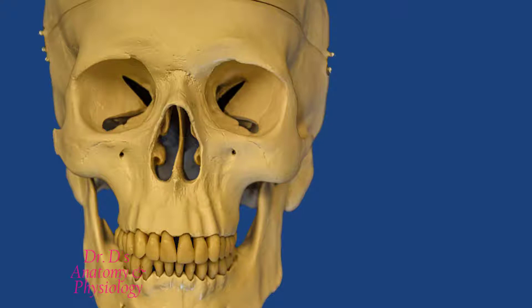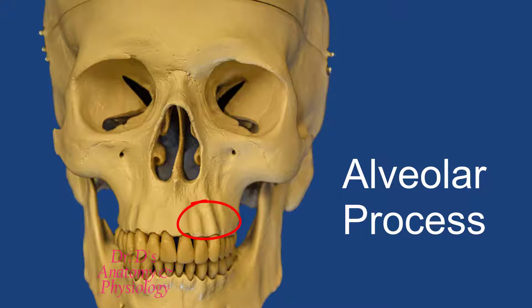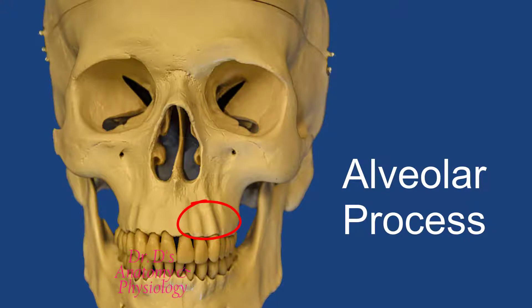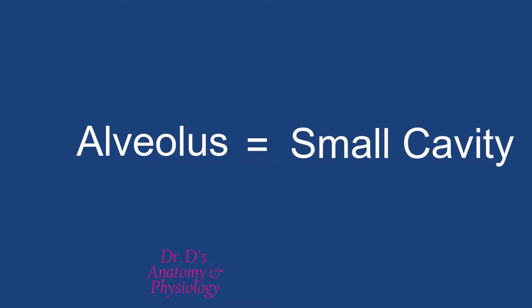Another process is a tricky one — it's called the alveolar process. This is a process which often confuses students because when you think of a process you think of something that sticks out and is somewhat restricted in how large it is. But in this instance the alveolar process is referring to something that is much more complicated. To understand why it's called the alveolar process, let's consider the word alveolar. It derives from the noun alveolus, which means essentially a small cavity. The plural of alveolus is alveoli.